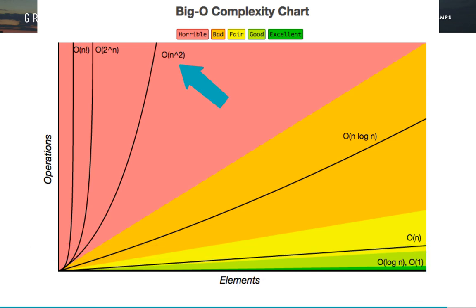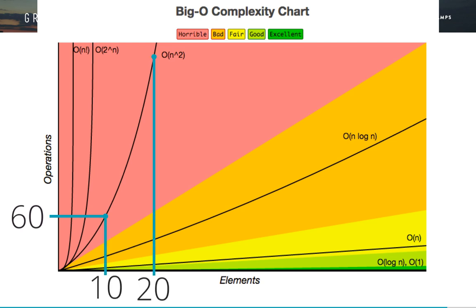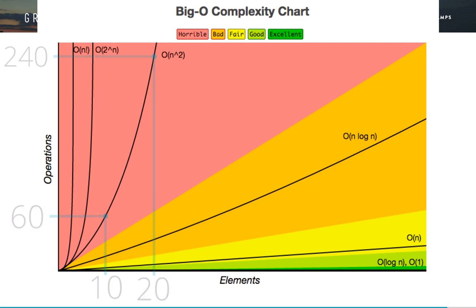Another curve is order N squared — that's an exponential line. This would be like insertion sort. Suppose it takes 60 operations to sort a list of 10 items. If you double the length of the list, you quadruple the number of operations from 60 to 240. At this rate, performance can get very bad very quickly as the array grows. Generally, we want to avoid order N squared algorithms if possible when working with a lot of data.